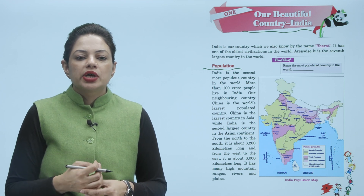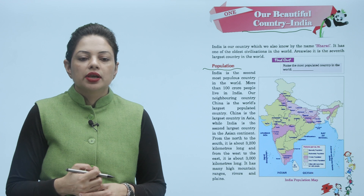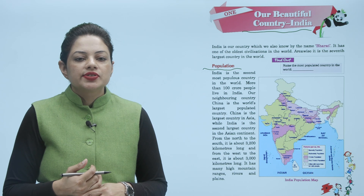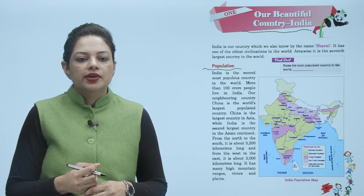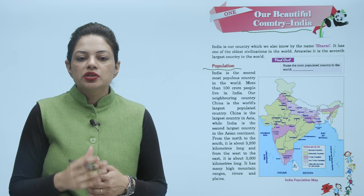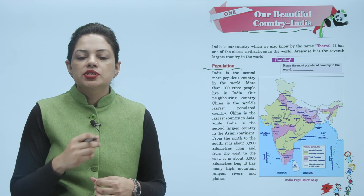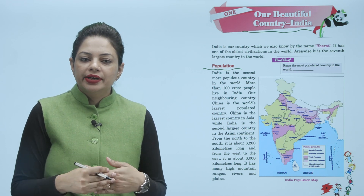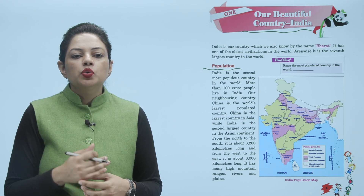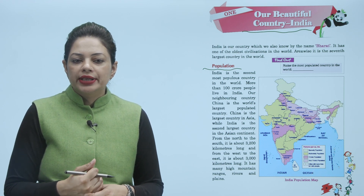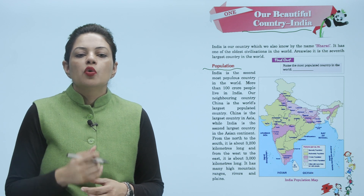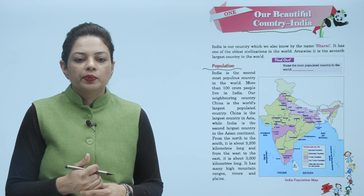Our neighboring country China is the world's largest populated country, while India is the 2nd largest country in the Asian continent. From north to south, India is about 3,200 km long, and from west to east, it is about 3,000 km long.